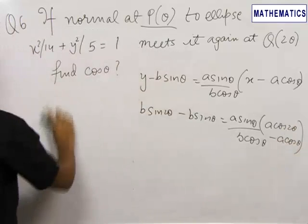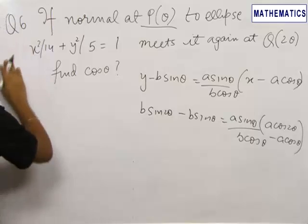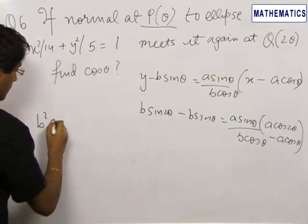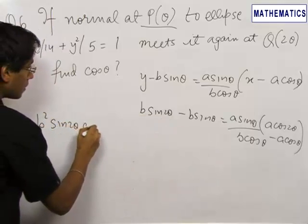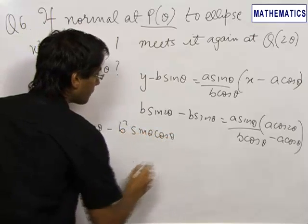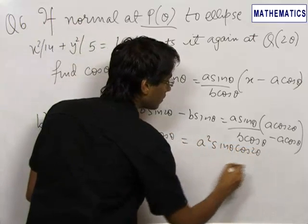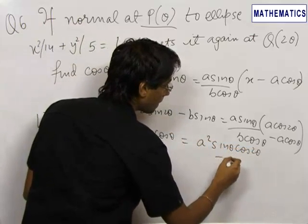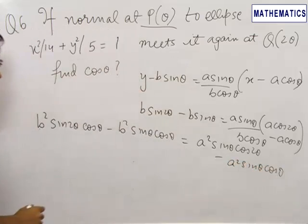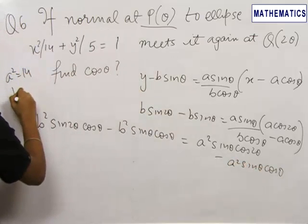We need to find θ such that the normal cuts the ellipse again at Q. This becomes b² sin2θ cosθ minus b² sinθ cosθ equals a² sinθ cos2θ minus a² sinθ cosθ. We know a² equals 14 and b² equals 5.